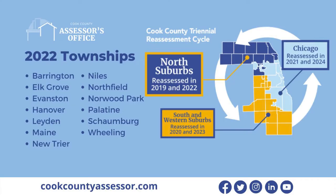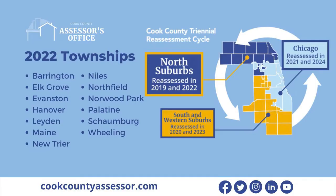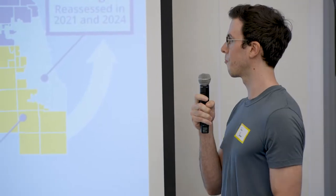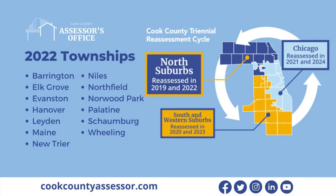This process happens in parts. Cook County is split up into three parts called triads. The city is one — that was reassessed last year in 2021. This year, the North triad will be reassessed, and that includes all of the townships on the left. So if you're from the northern suburbs, you will be reassessed this year in 2022. Next year will be the south and west suburbs in 2023.